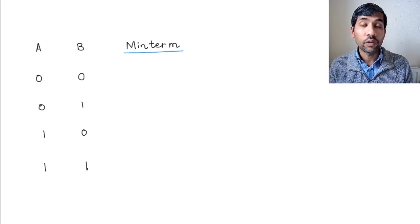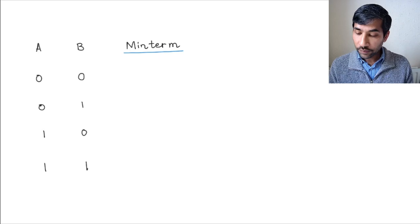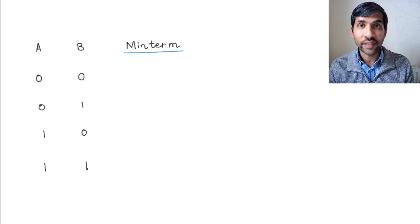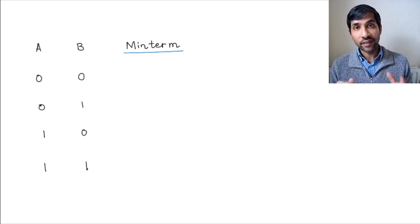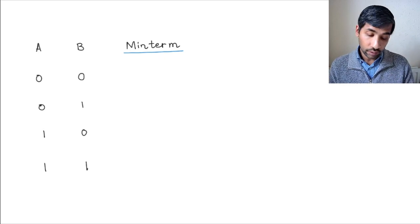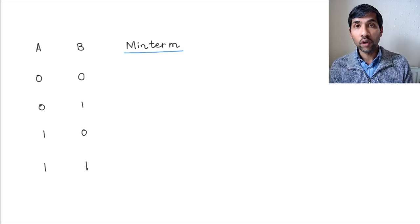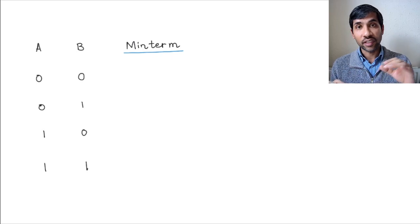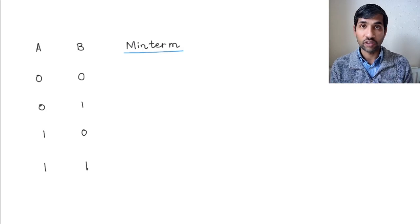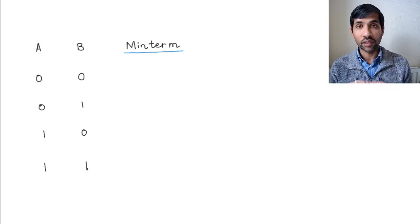In this video I want to introduce a basic terminology called minterms. If you remember, we had said that when we want to write a truth table for a particular application, what we want is we take the inputs and we write all the combinations of the inputs. For example, if a and b are the inputs, I have written all the combinations of a and b here. We look at the output at each of these combinations of inputs, and that defines the entire function of our logic circuit. Now if you want to convert this into Boolean expressions, there are various ways of doing it, and one of the ways is to define what is called minterms.